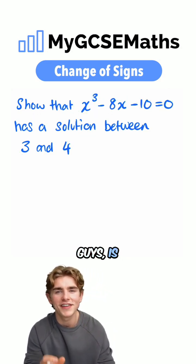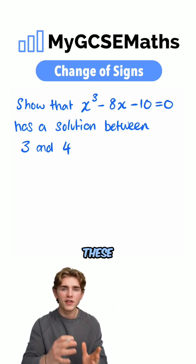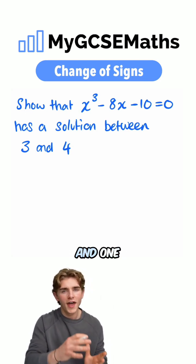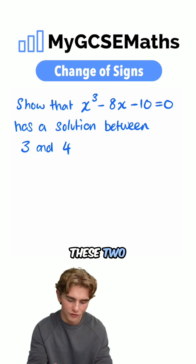Now what we're going to do is use the change of signs method. We're going to sub in both values and show that one is positive and one is negative. This means that there has to be a solution between these two values.